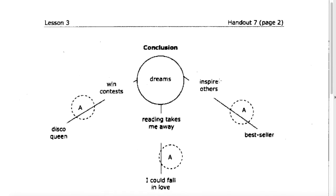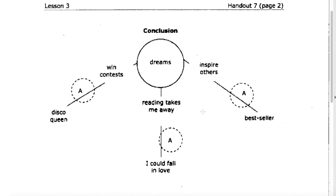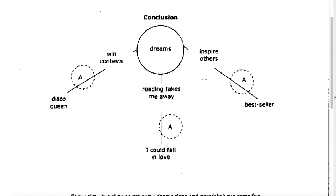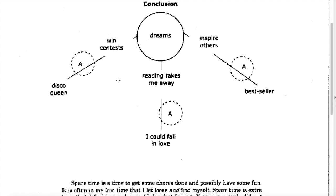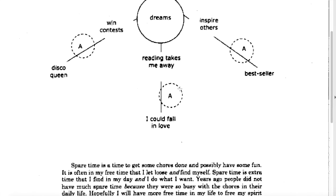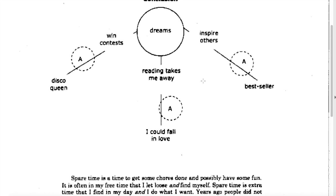The conclusion is a really neat way to do a little bit of dreaming or creative writing. These would be the if-type statements that let the readers know what you would really like to do with your spare time if you could. So Jan talks about winning disco contests so she could be a disco queen, or writing a novel because reading takes her away and maybe she could fall in love. And finally, she wants to be a better writer and inspire others, which might make her a bestseller with her books.